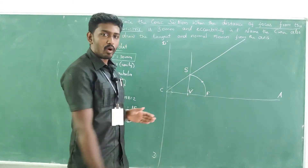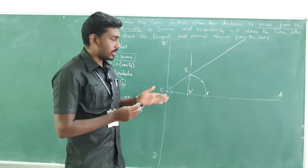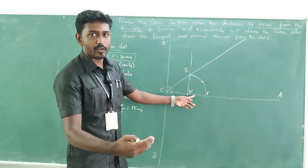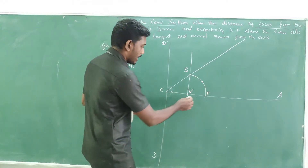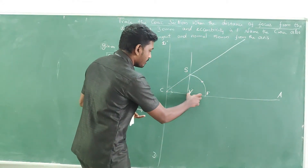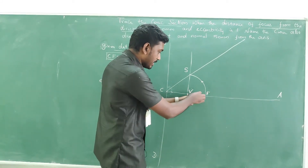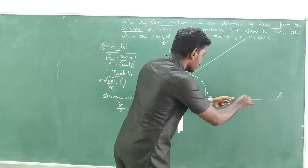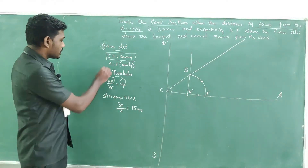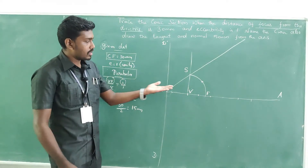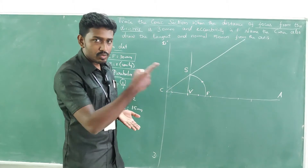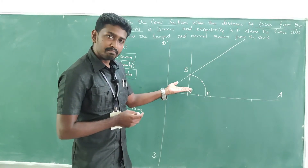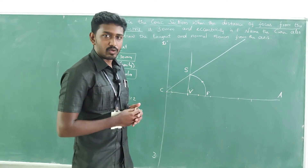Next, we need to find all the moving points to trace the parabola. From the vertex, divide the axis into equal parts of 10 mm each. Since it is a parabola, 5 or 6 consecutive lines are more than enough to trace the shape — unlike an ellipse where we need a minimum of 10 to 15.